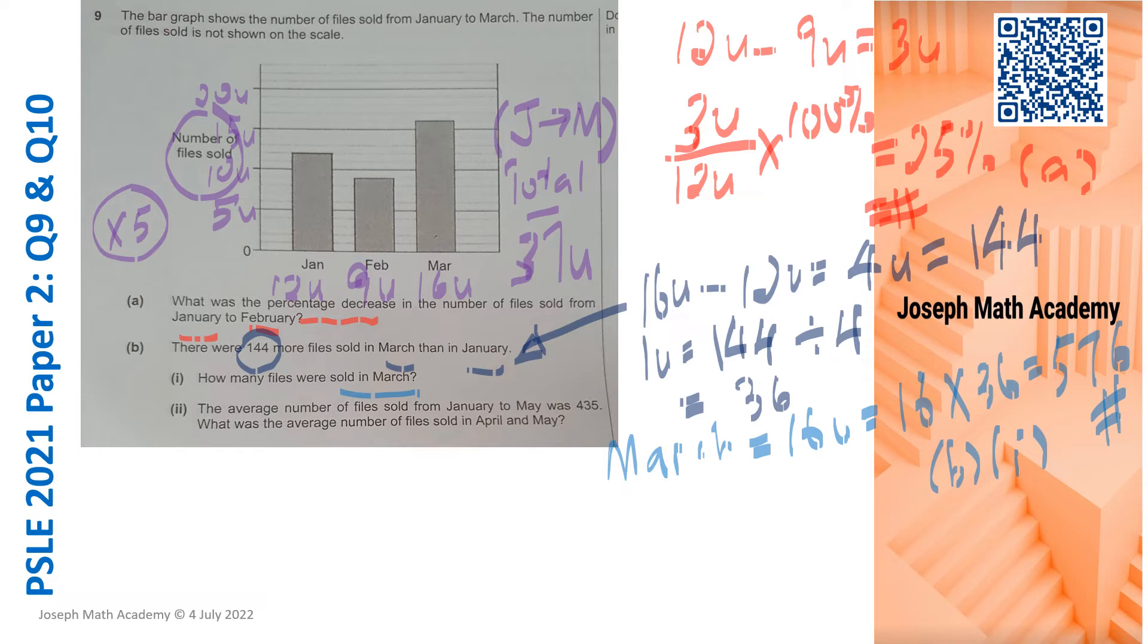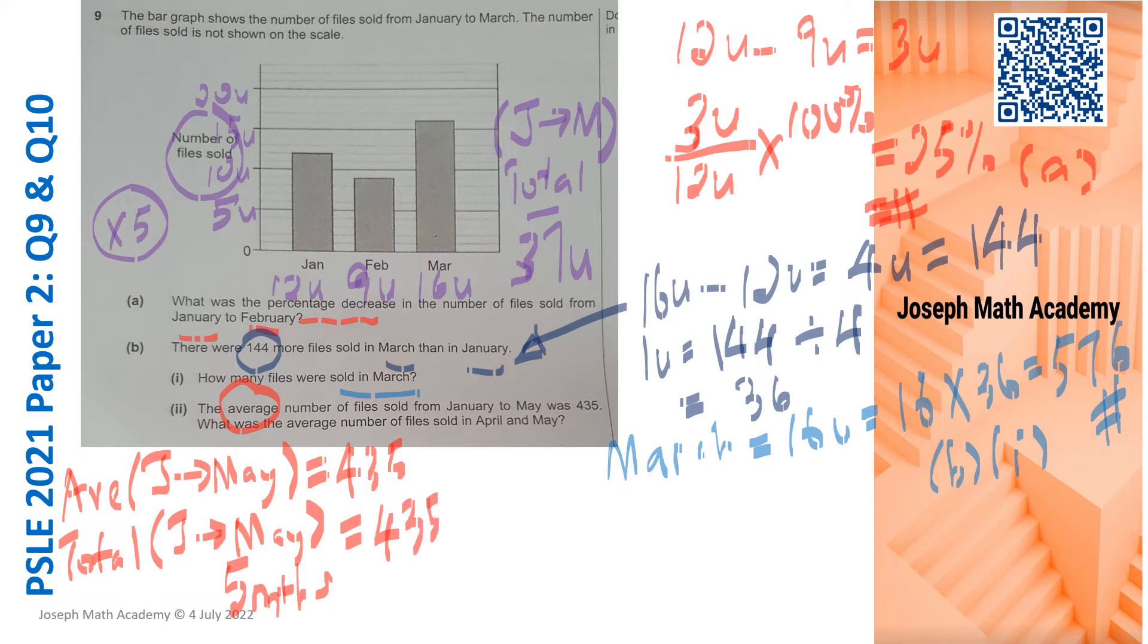B part 2 is a little bit different. We are given the average of files sold from January to May. Average from January to May is 435. Remember we are not supposed to work with average, we work with total. January to May is actually 5 months. Let's find the total, just times 5 and that gives us 2175. So the total number of files sold from January to May, a total of 5 months, the total is 2175.